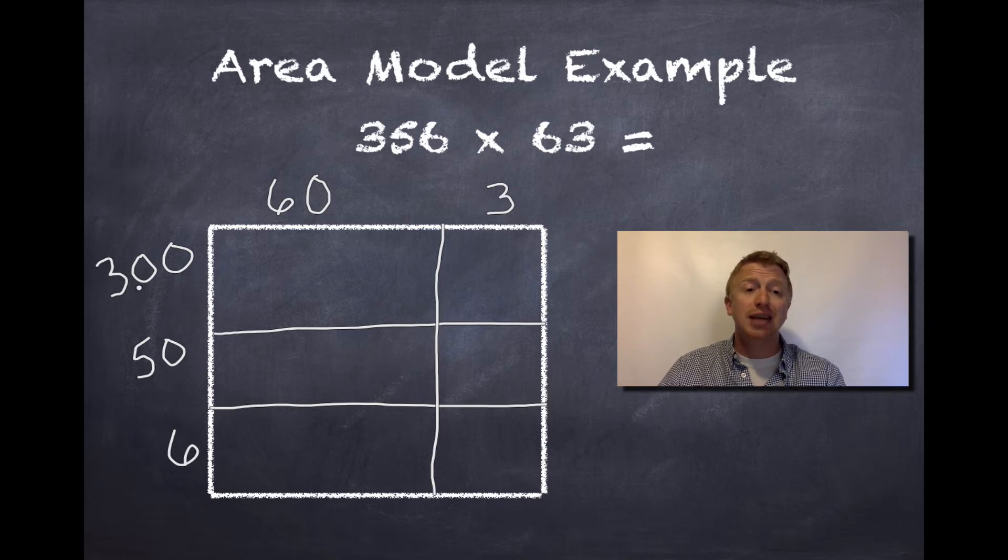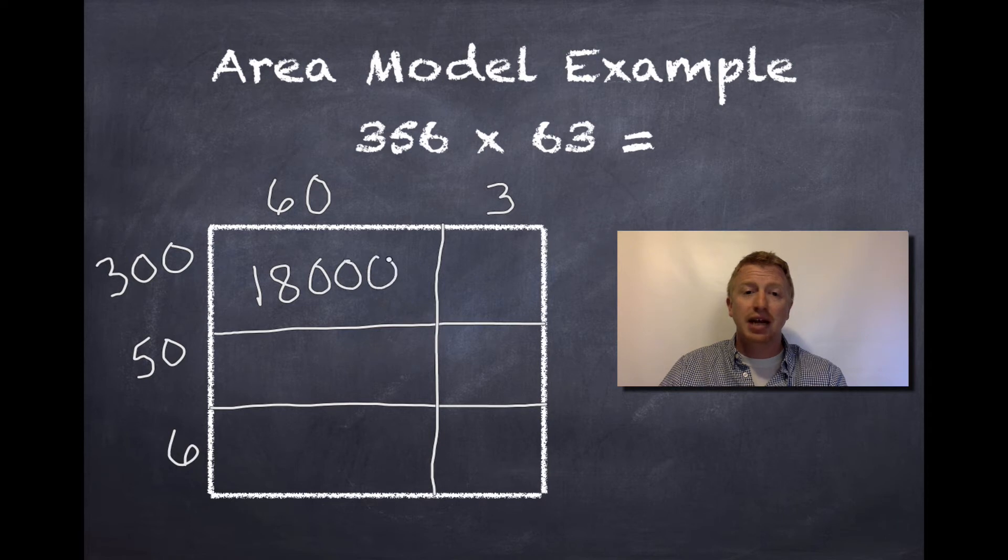3 times 6 happens to be 18. Now, the three zeros within my factors, 1, 2, 3, I'm going to put those at the bottom, or at the end. 300 times 60 is 18,000. Let's move to the next one.